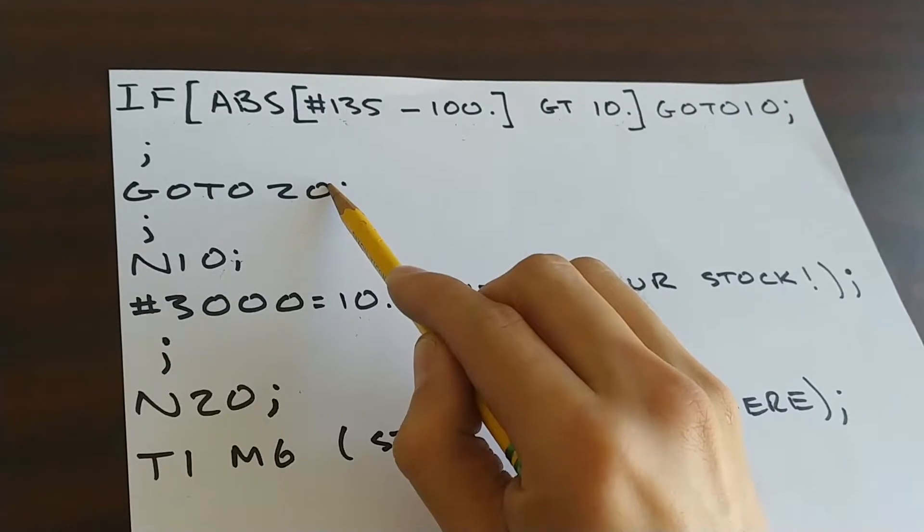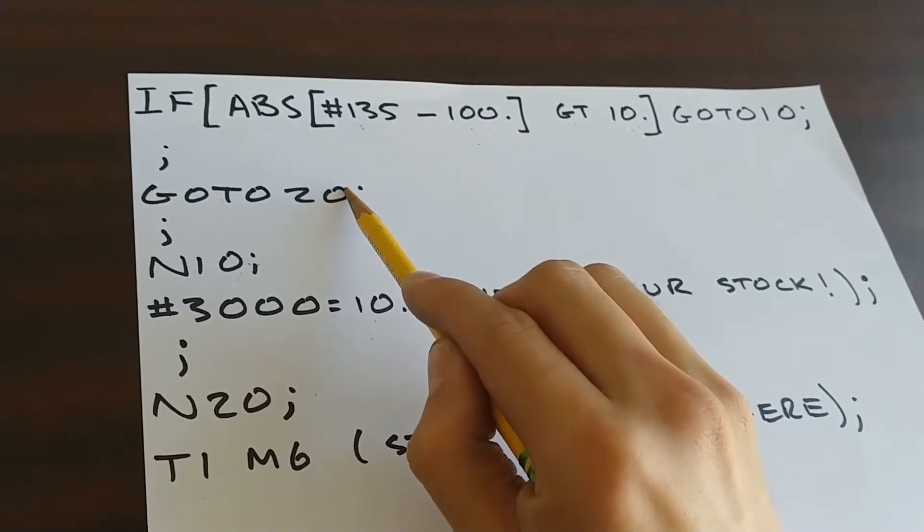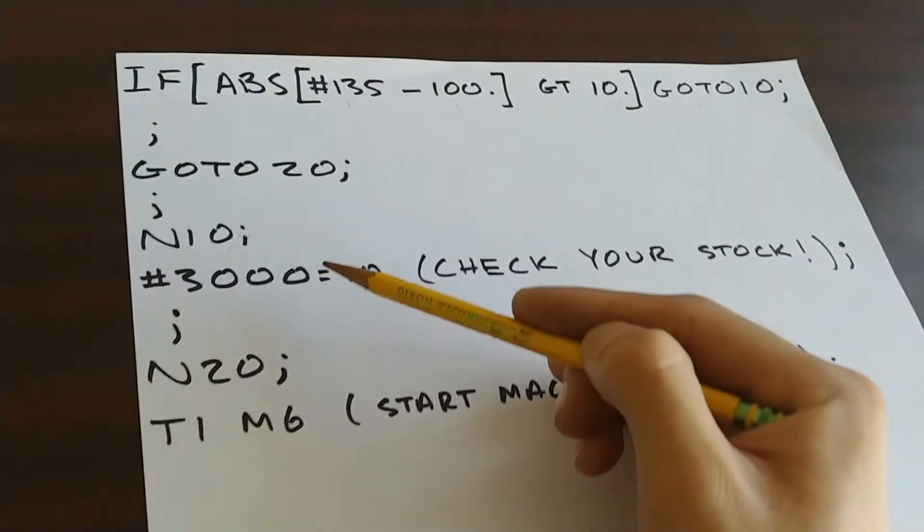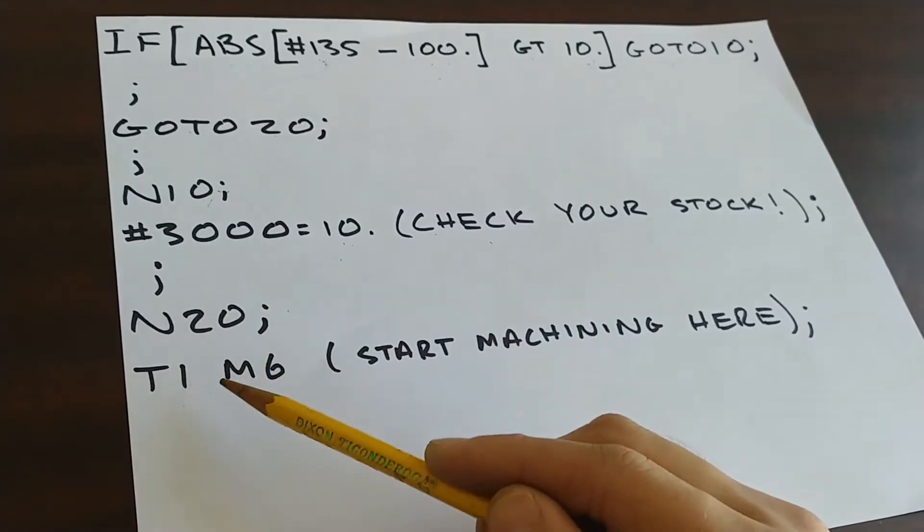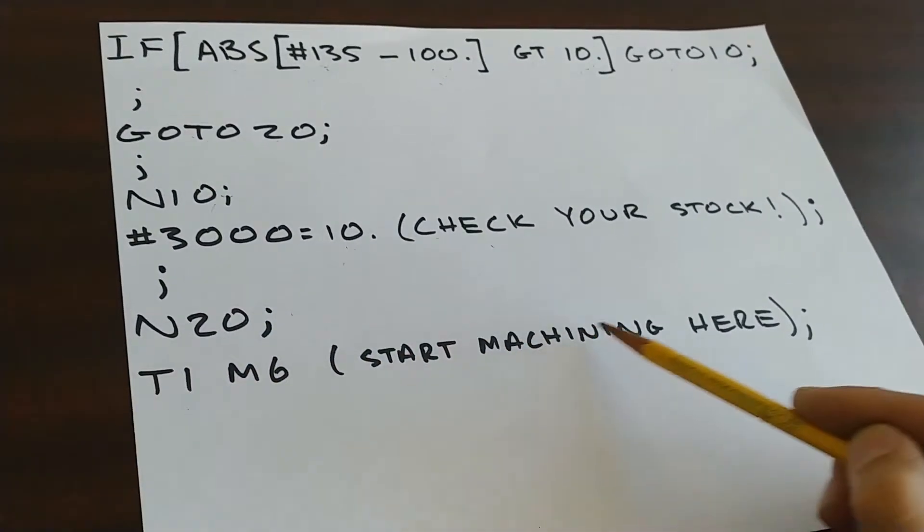So then we get to line to this command to go to line 20, which will jump over the alarm so we don't get stuck there. Then we'll get to line 20 where we will continue machining.